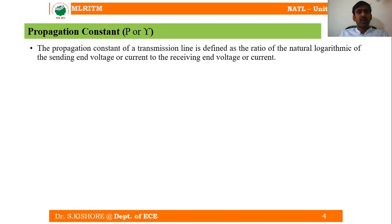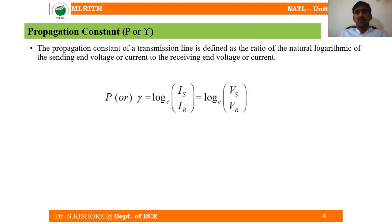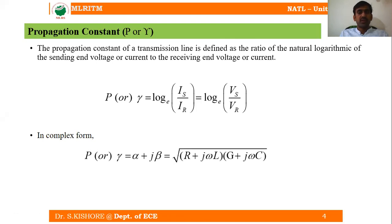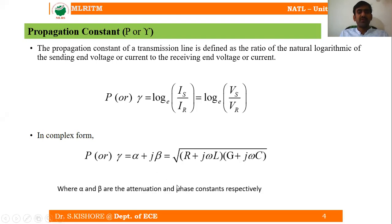The propagation constant of the transmission line is defined as the natural logarithm of the ratio of the sending-end voltage to the receiving-end voltage, or sending-end current to the receiving-end current. In complex form, gamma is equal to alpha plus j beta, which is equal to the square root of (R + jωL)(G + jωC) — an expression we have already derived. Here alpha and beta are the attenuation and phase constants, and our task is to derive expressions for them.